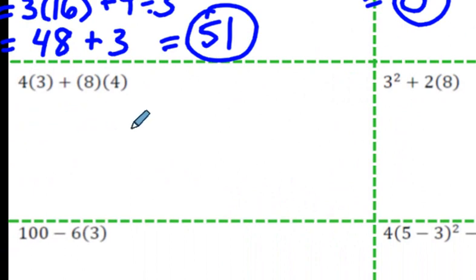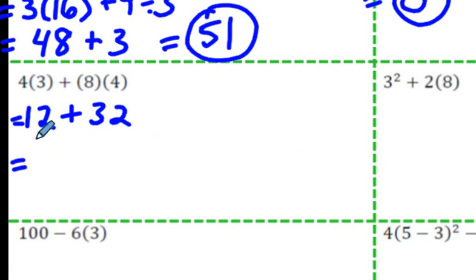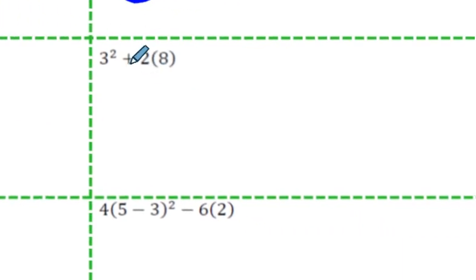I know I'm going to get lots of comments if I end up messing up some of these. The next one has multiplication, addition, and then multiplication again — just multiply. 12 plus 32... 42 plus 2 is 44. That should be the answer there.